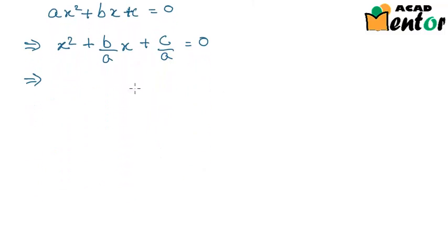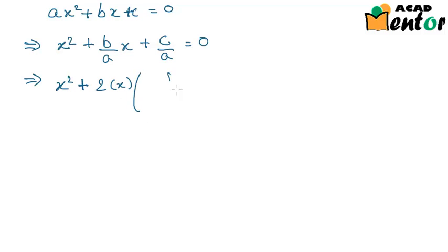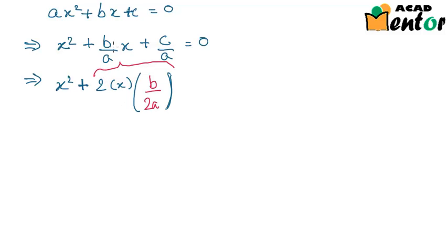The next step to solve by completing the square is to add and subtract a constant so that we can form a complete square. If the first term is X², the second term can be split as 2 times X times a particular number. That number, when multiplied, should give us the middle term B/A · X. So we need 2 × X × (B/2A), which gives B/A · X on multiplication.